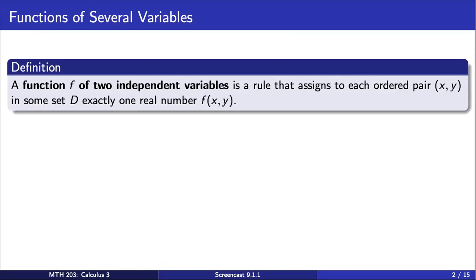Up to this point, you've likely studied functions of a single variable in Calculus 1 and 2. While single variable functions take a single real number as input, functions of two variables take an ordered pair as input. Let's look at some examples.